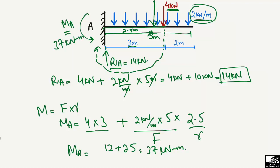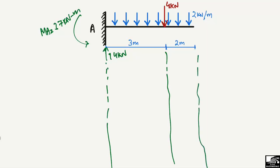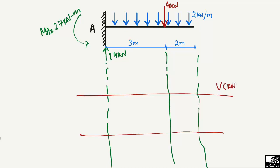So that is how we find the support reaction RA equals fourteen kilonewton and moment MA equals thirty-seven kilonewton meter. Now we draw the reference lines for the shear force diagram and the bending moment diagram. Shear force will be represented in kilonewton and bending moment in kilonewton meter.